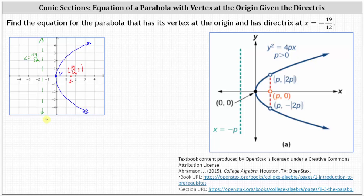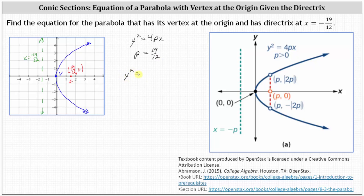So because the directrix is parallel to the y-axis and the parabola opens along the x-axis and the vertex is at the origin, the equation must be in the form of y squared equals 4px. Because the parabola opens along the positive x-axis, p is positive. The focus is p comma 0, indicating p equals 19 twelfths. Therefore, the equation is y squared equals 4 times 19 twelfths times x. Simplifying — notice 12 and 4 share a common factor of 4 — our simplified equation is y squared equals 19 thirds x.